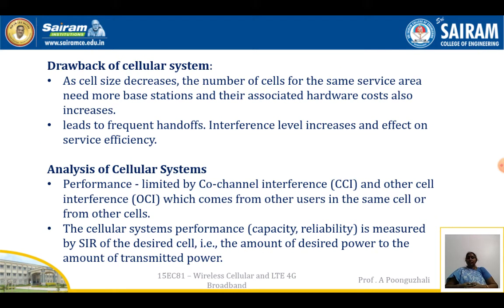The drawbacks of the cellular system are: as the cell size decreases, the number of cells for the same service area increases, and so does the number of base stations. More base stations means more associated hardware and therefore higher cost. With more cells there are frequent handoffs, and because smooth handoff is a real challenge, the interference level can increase, which in turn affects service efficiency.